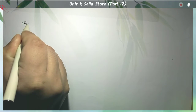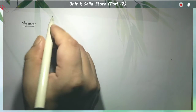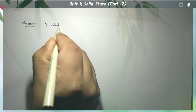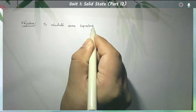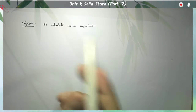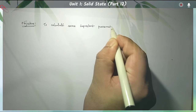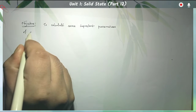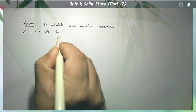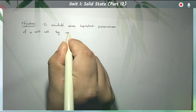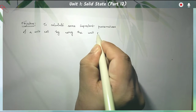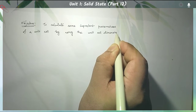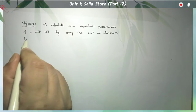The objective of this class is to calculate some important parameters using the information of the length of each unit cell — specifically, the unit cell dimension, which means the edge length.